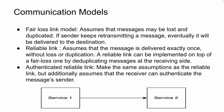Let's learn about the communication model. Let's say service one is communicating with service two. There can be certain models of communication. The first model is a fair loss link model — it assumes that a message may be lost and duplicated, but if the sender keeps retransmitting a message, eventually it will be delivered to the destination.